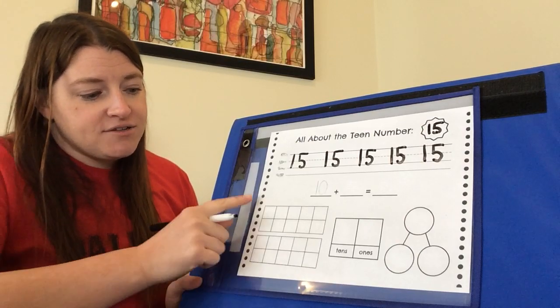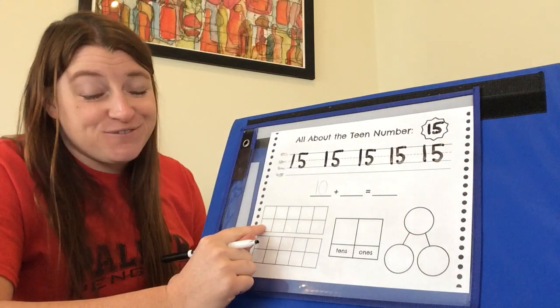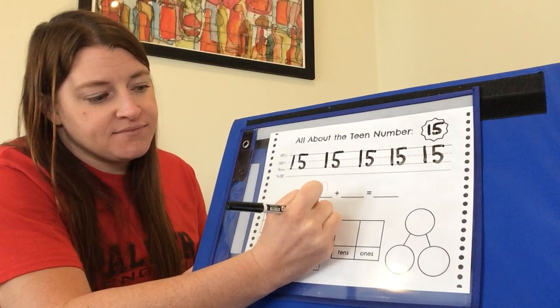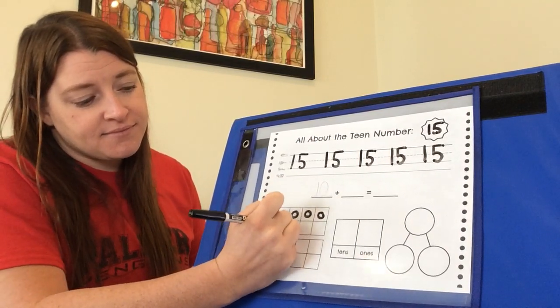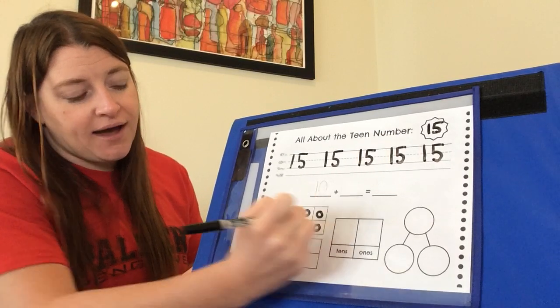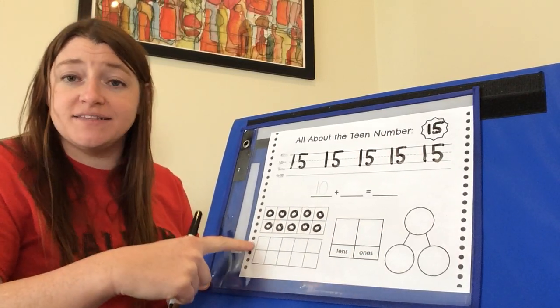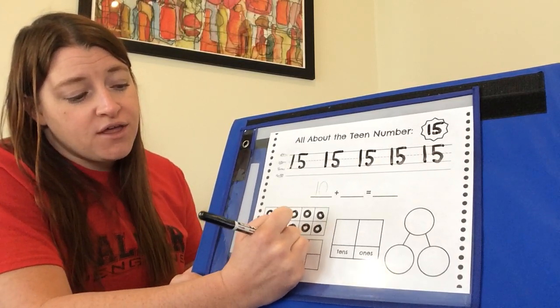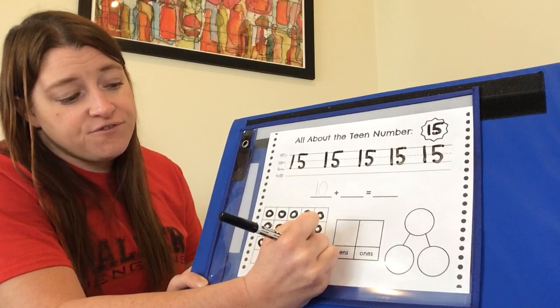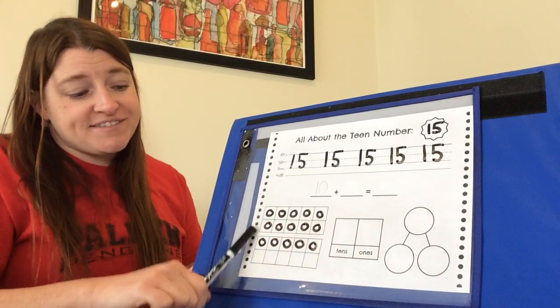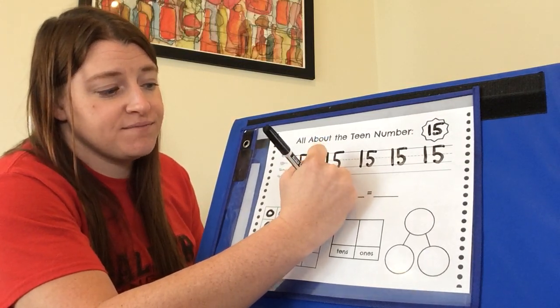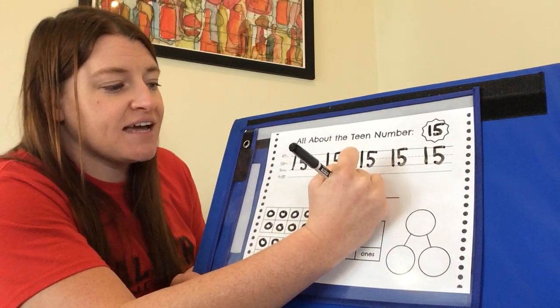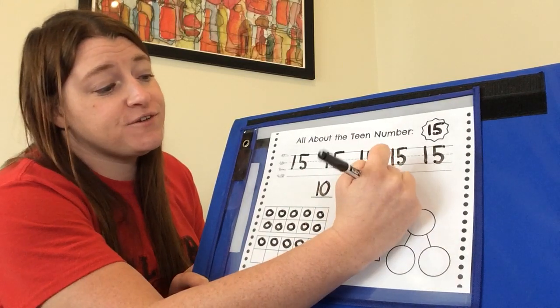Let's go on now to filling in our double 10 frame. Like all teen numbers, 15 has a full group of 10. So let's fill in that first 10 frame. Okay, so we have 10 and now we'll count on to add some more ones. 10, 11, 12, 13, 14, 15. We have 10, full 10 frame, plus five more ones. So 10 plus 5 equals 15.